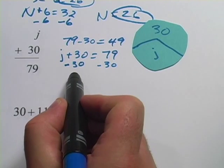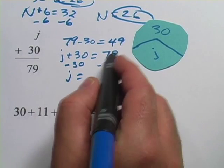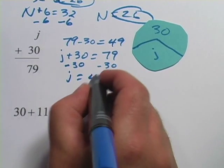Plus 30 minus 30 is zero, leaves just j over there. And on this side, we have 79 - 30 = 49.